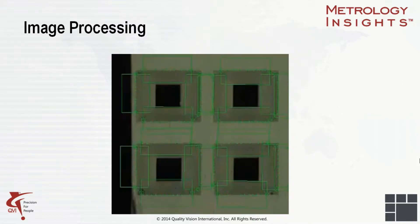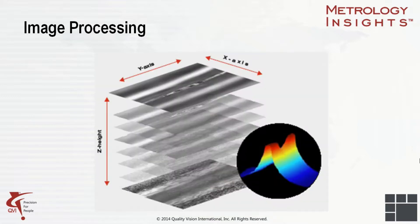In this example, we use the blob tool to locate the center of the four countersunk pockets. Then we use those known locations to place edge finders on all the sides of the pockets to measure them. In this next example, we have a focusing tool which enables us to see a cross-section of a part without touching it. This part is a die made to cut decorative paper. The multicolored plot shows the measured image of the die.